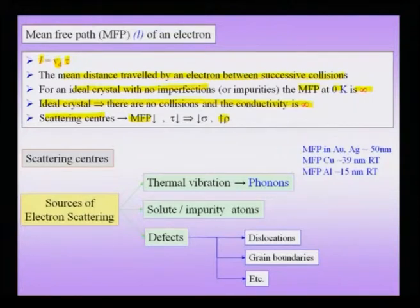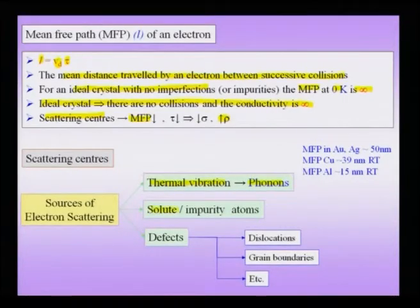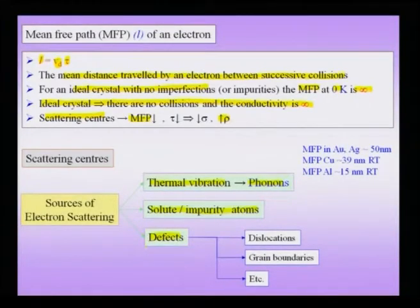The origins of scattering centers include: first, thermal vibrations — the collective quantized modes of atomic vibrations are called phonons, and if an electron suffers a collision with a phonon, its velocity can be reduced to zero. Second, solute or impurity atoms — whether substitutional elements intentionally added or unintentional impurities — distort the lattice and cause imperfections that act like scattering centers for conduction electrons. Additionally, crystal defects like dislocations, grain boundaries, and stacking faults also act as scattering centers.